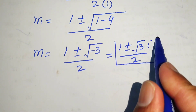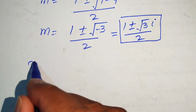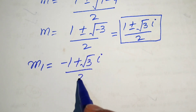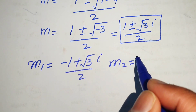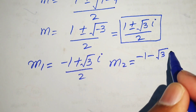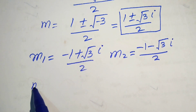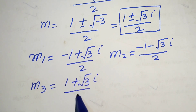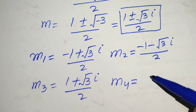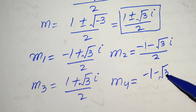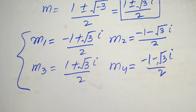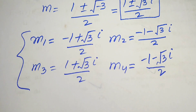So the four roots of the given equation are: m1 equals minus 1 plus square root of 3 iota divided by 2, m2 equals minus 1 minus square root of 3 iota divided by 2, m3 equals 1 plus square root of 3 iota divided by 2, and m4 equals 1 minus square root of 3 iota divided by 2. These are the four roots and this is the final answer. Thank you for watching — please subscribe for more videos.